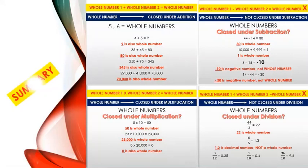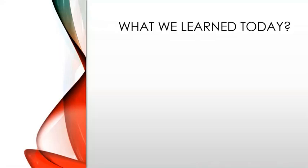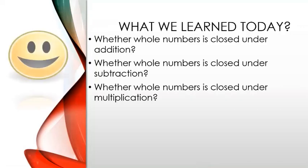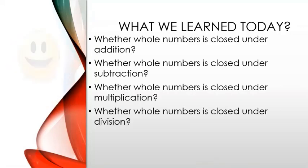So this is a summary of what we learned today. Whole numbers are closed under addition and multiplication. Whole numbers are not closed under subtraction and division. We explored whether whole numbers are closed under each of these four operations.